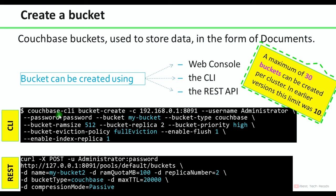This is the command to create a bucket using the command line interface: bucket-create, the IP address, admin username and password, and the bucket name. The bucket type is Couchbase bucket, RAM size you want to allocate, bucket replicas — how many replicas you are going to have. One point about replicas: if you mention replica 2, then the bucket will have a total of three copies — one original copy plus two replica copies, totaling three copies in the cluster.